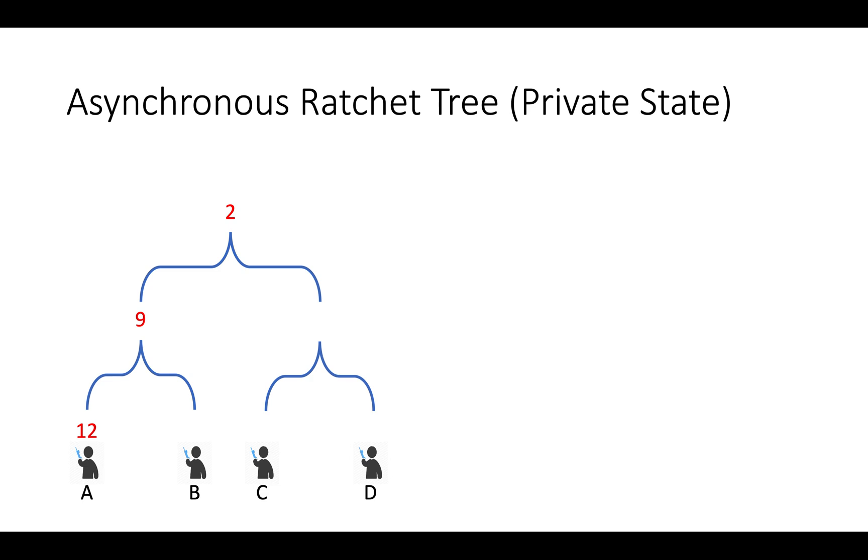This is called private state or path secret. This is very specific to each individual user. For example, user A has her own path secret. User C has his own path secret. This will not store on server. This will be stored at the client side.